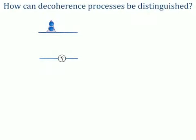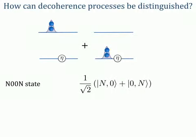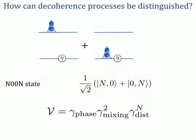Single-photon states, or, more generally, noon states, are not suitable for this task, because the interference contrast turns out to be simply the product of the three decoherence parameters.